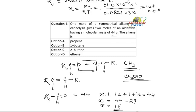So what will be your alkene? These R groups are alkyl groups, that is CH3. So what is it? It is 2-butene.